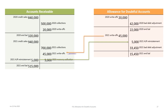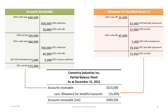Write-offs and reinstatements both affect accounts receivable and allowance for doubtful accounts. On the partial balance sheet at December 31st, we have accounts receivable of $515,000 less the allowance for doubtful accounts of $15,450, giving a net receivable of $499,500.